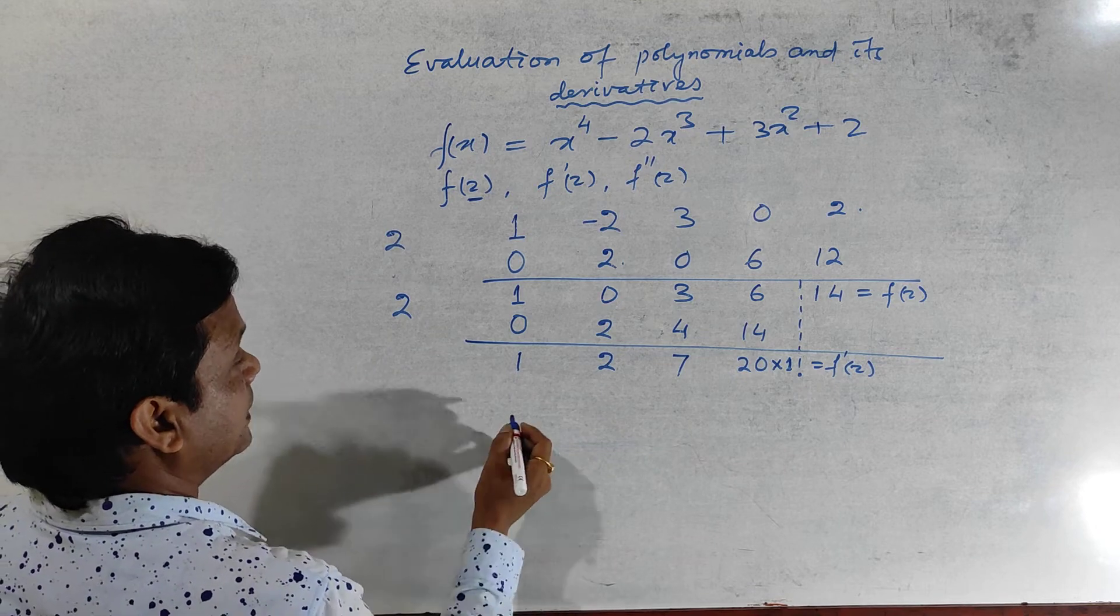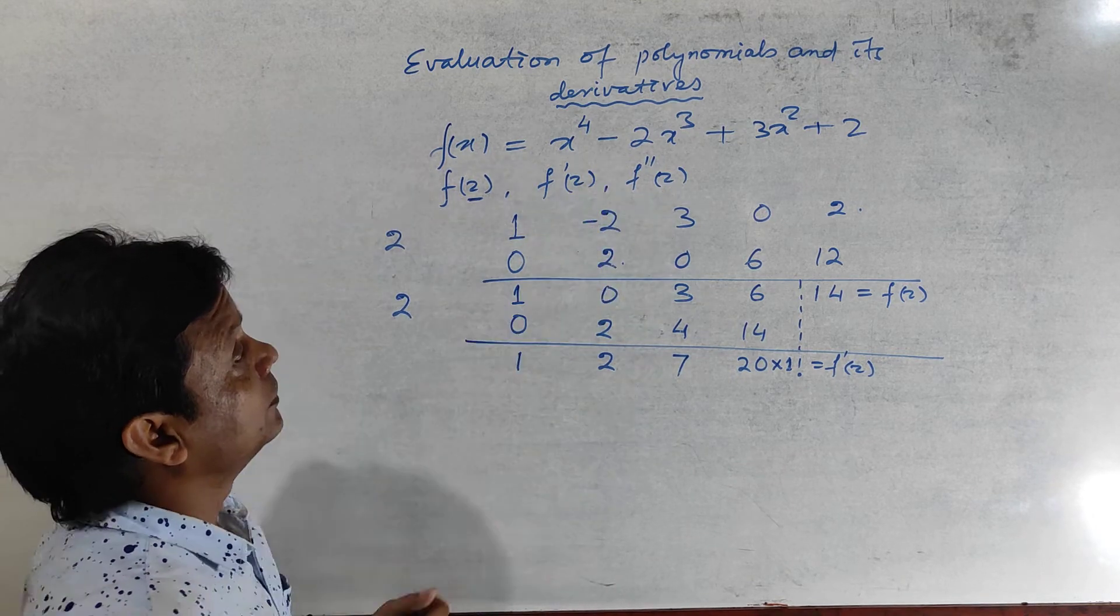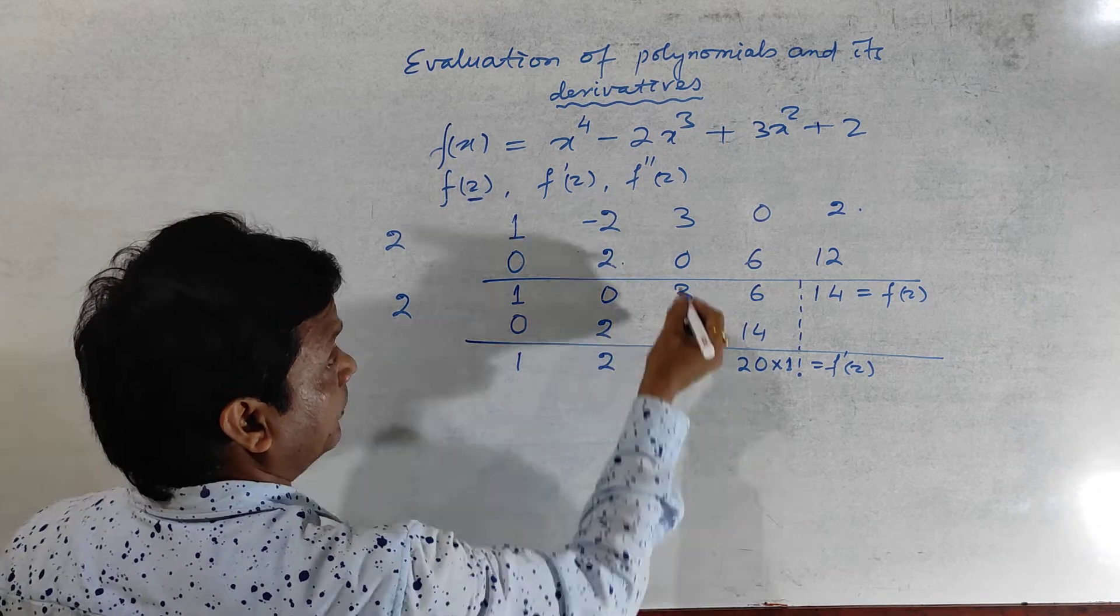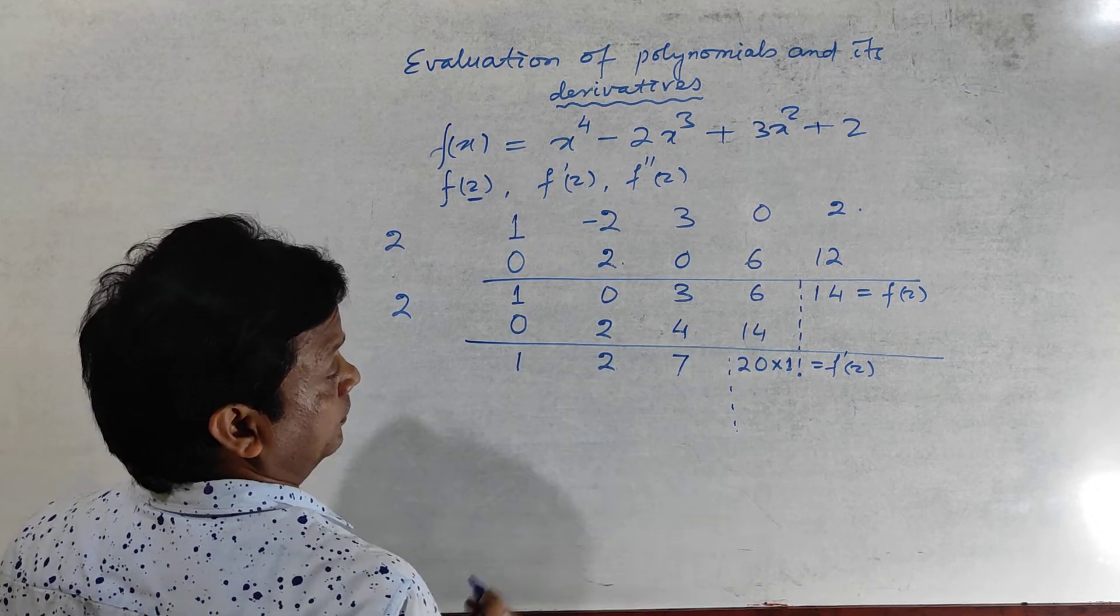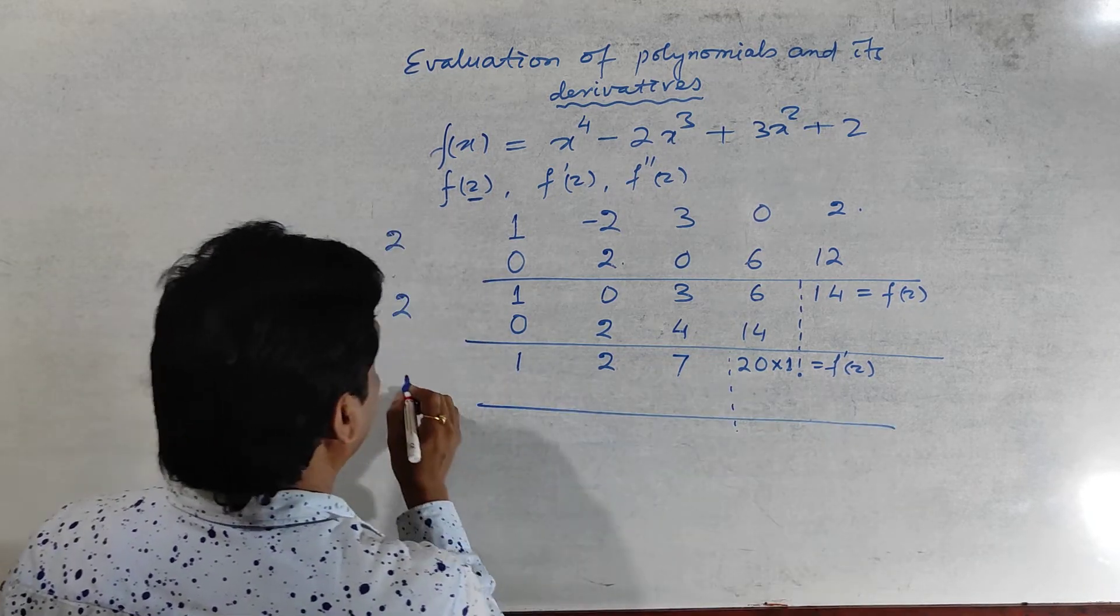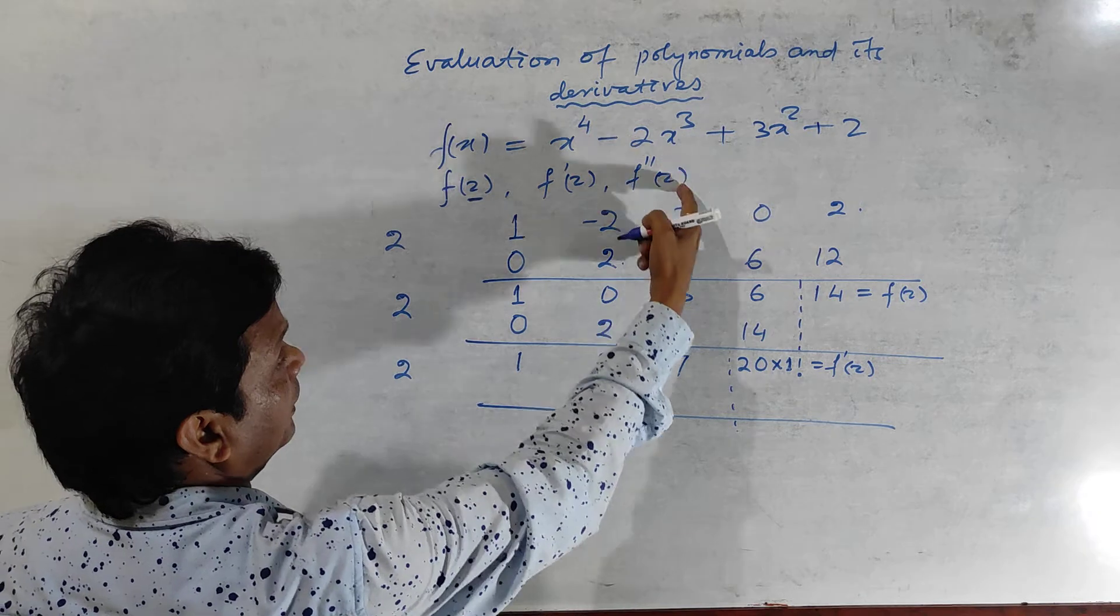You can check also. See, now how to find out f dash 2. Again, while determining the second derivative, you should eliminate the last column. So proceed same way, in the same way write 2 here, because you have to find out f dash 2.